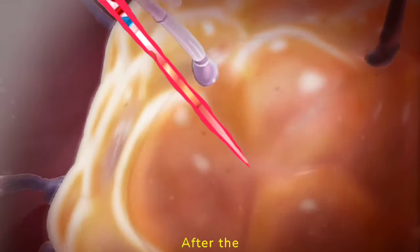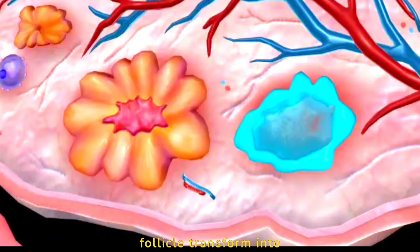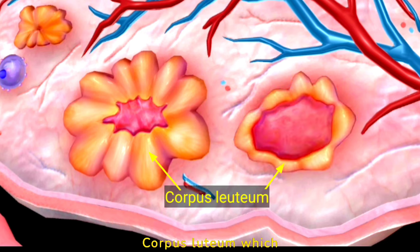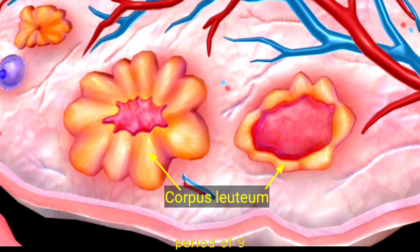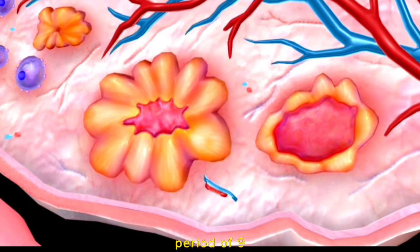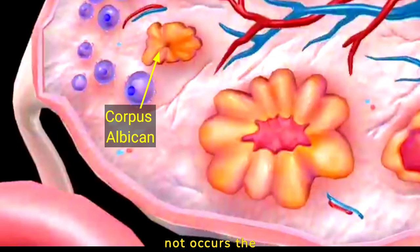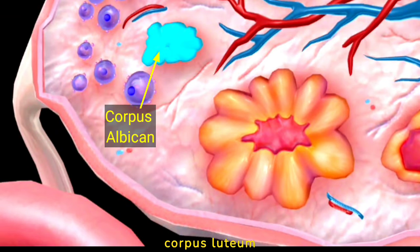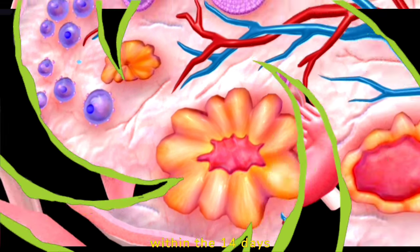After ovulation, the Graafian follicle transforms into the corpus luteum, which maintains progesterone levels during the whole pregnancy period of nine months. But if pregnancy does not occur, the corpus luteum degenerates into the corpus albicans within 14 days of ovulation.